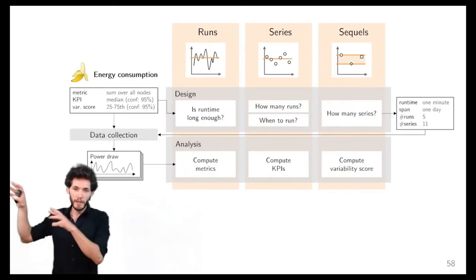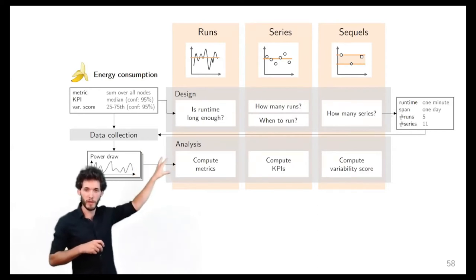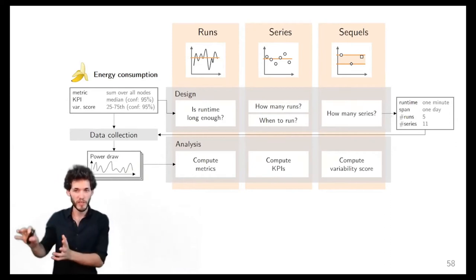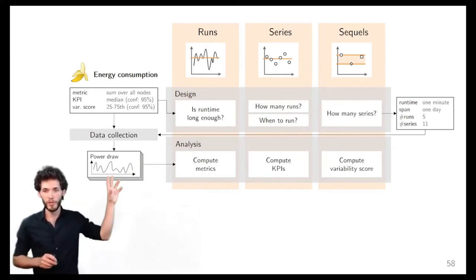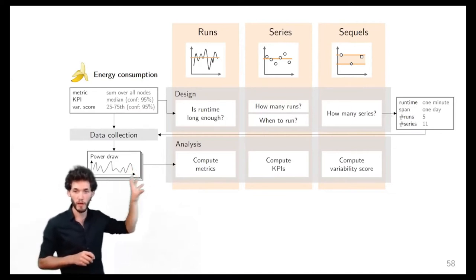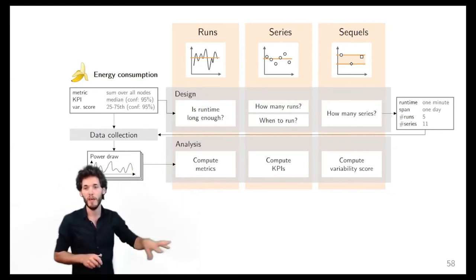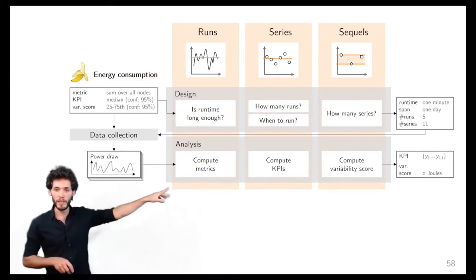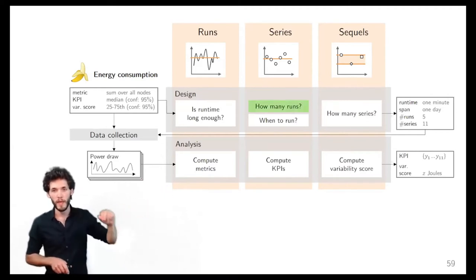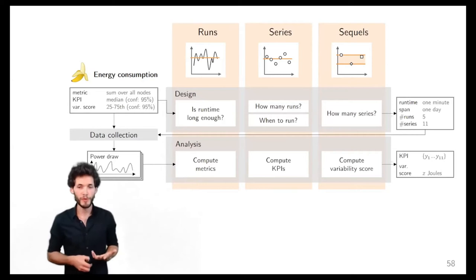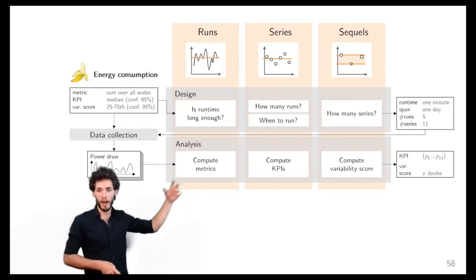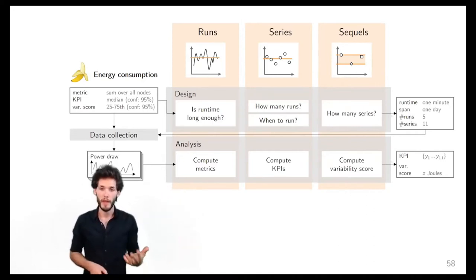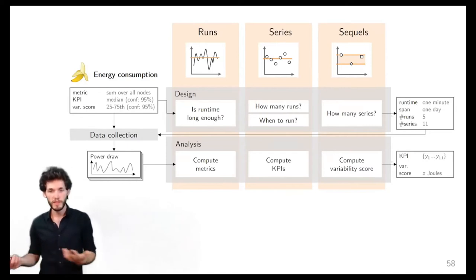Once you have this, you run your scripts, collect data from your experiments — which is outside the scope of TriScale — and then pipe the raw measurements into the second phase: data analysis, through which you compute your metrics, KPIs, and variability scores and get values on the other end. The key interest of this process is that the values you get at the end are associated with quantifiable confidence, which I'll explain throughout the presentation.